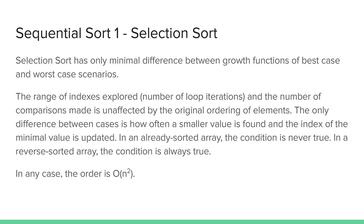Because the number of inner and outer loop iterations is completely unaffected by the original ordering of elements, there's very little difference between the best case and worst case growth functions for selection sort. The only difference is how often the index of the minimal value is updated inside the inner loop. In an already sorted array, the condition would never be true; in a reverse sorted array, the condition would always be true. In any case, the order is always O(n²).